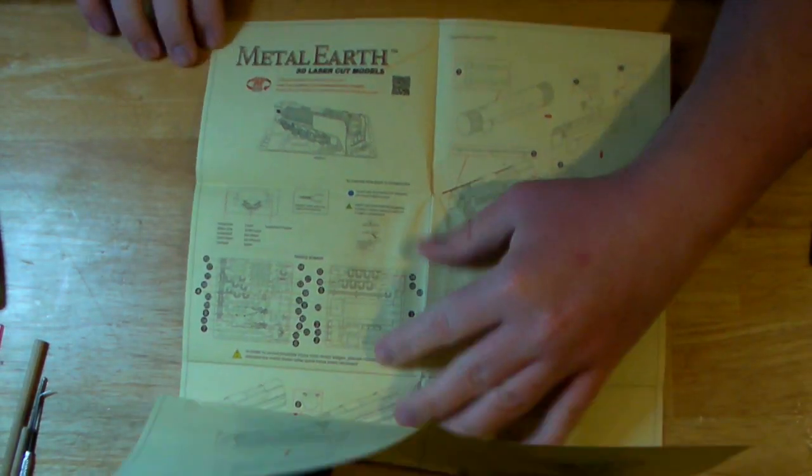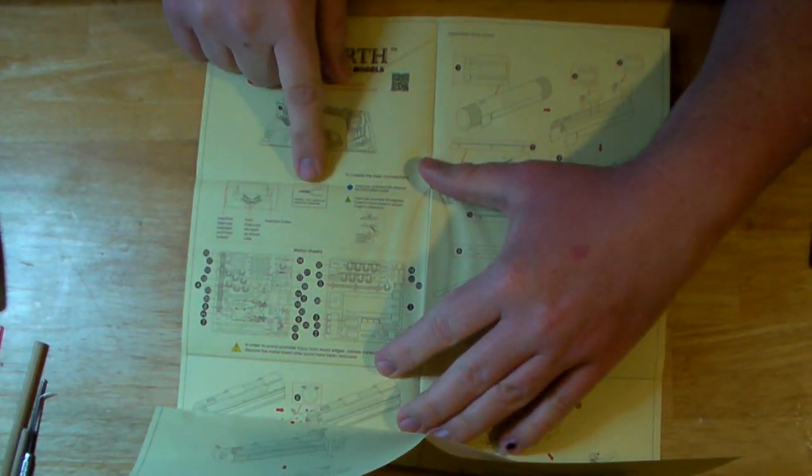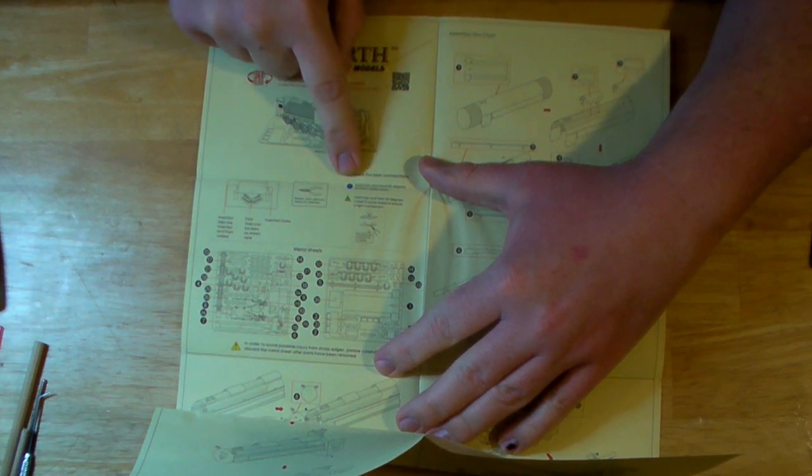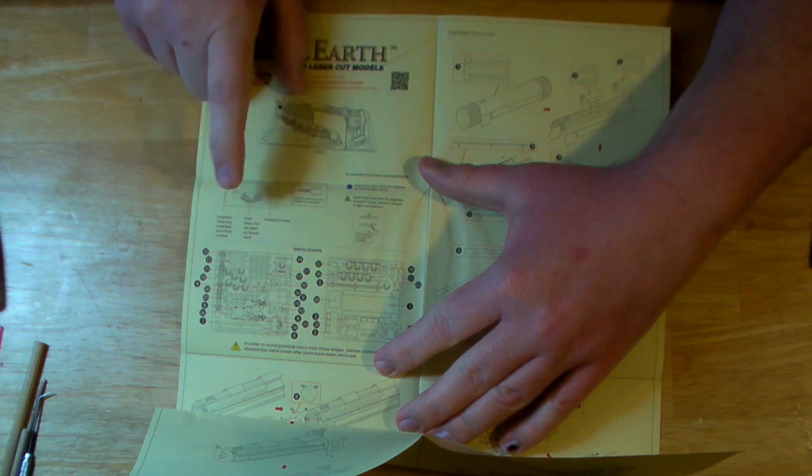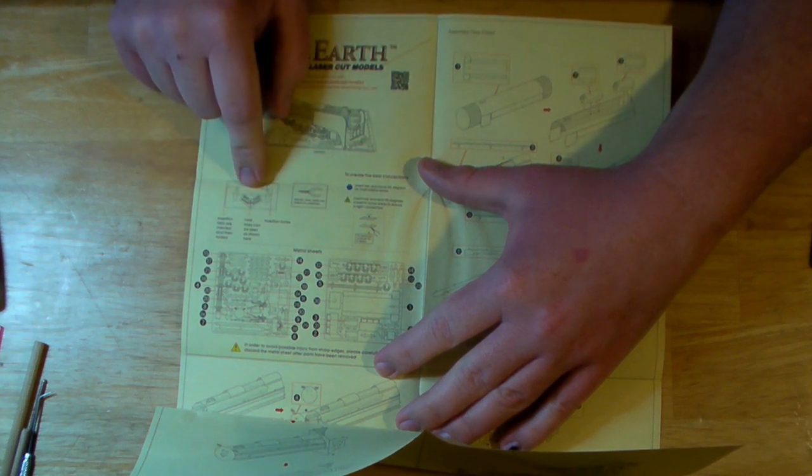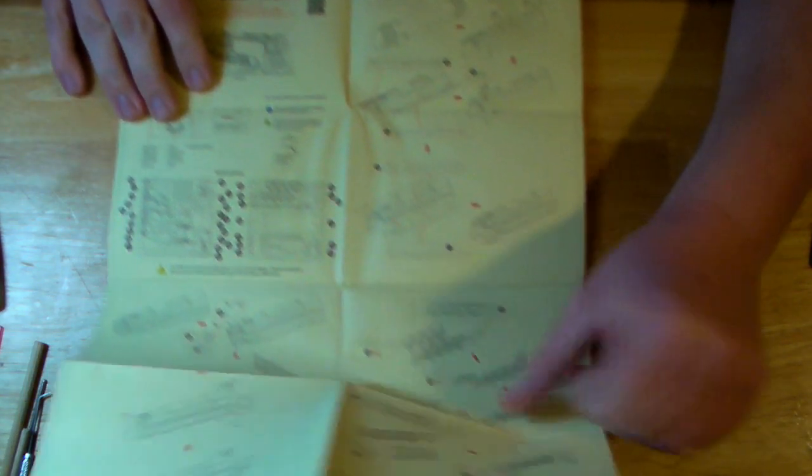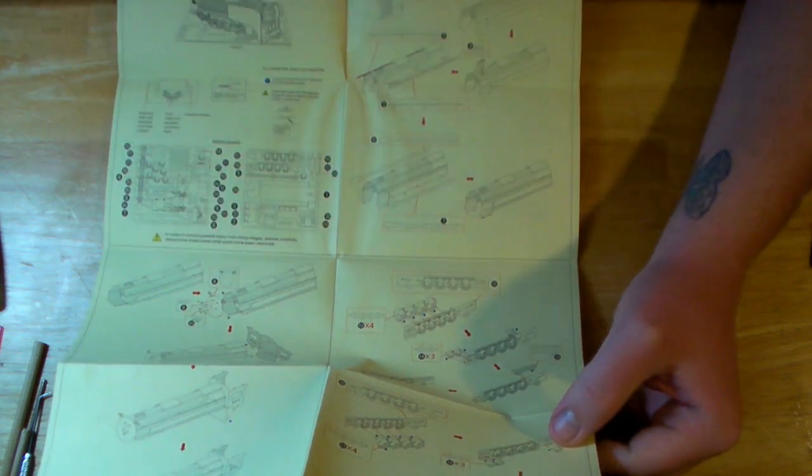You've got a little bit about the needle nose pliers and the tabs. Circles mean fold over, triangles mean twist 90 degrees. A little bit about folding and inserting the tabs. And then you just jump right into building the kit.